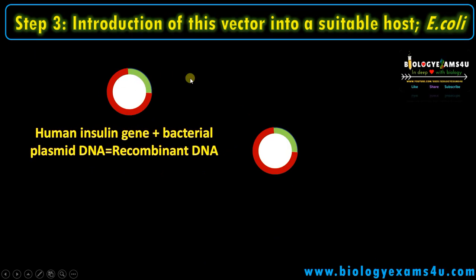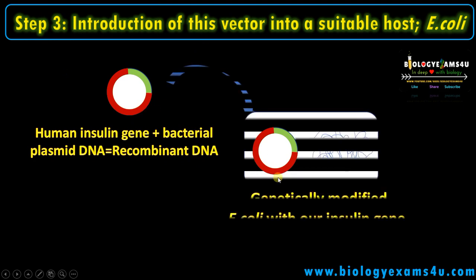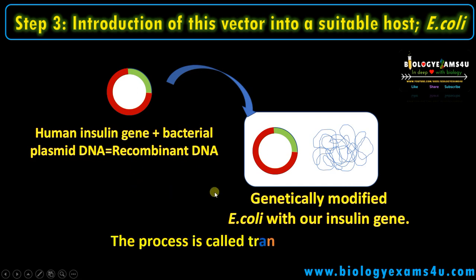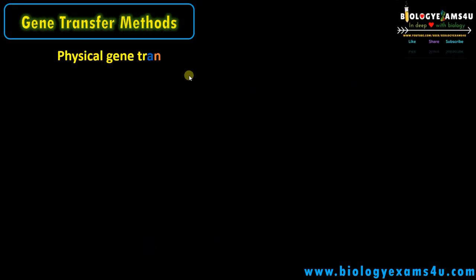Step three is introduction of this vector into a suitable host. We introduce the recombinant DNA molecule into a host. The most common host is E. coli; other hosts include yeast and cell lines. The process is called transformation. There are different gene transfer methods.